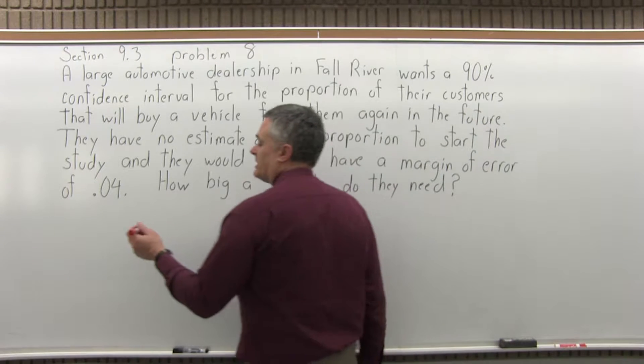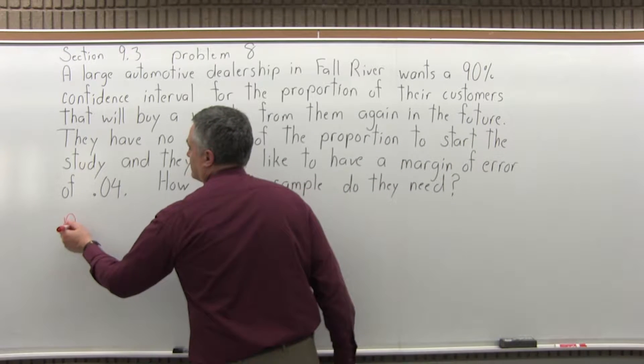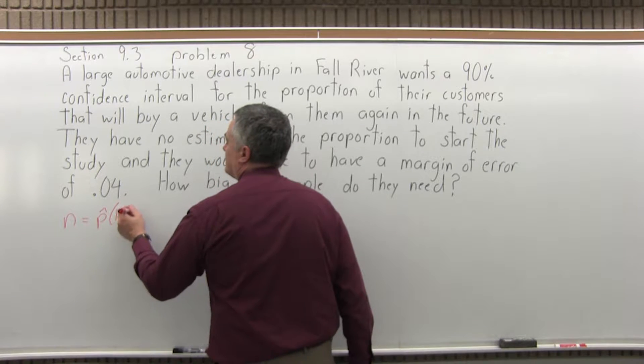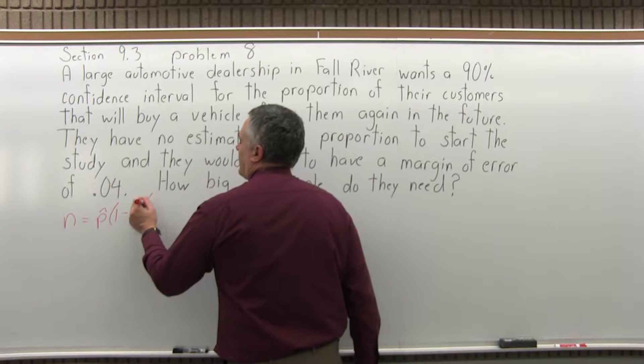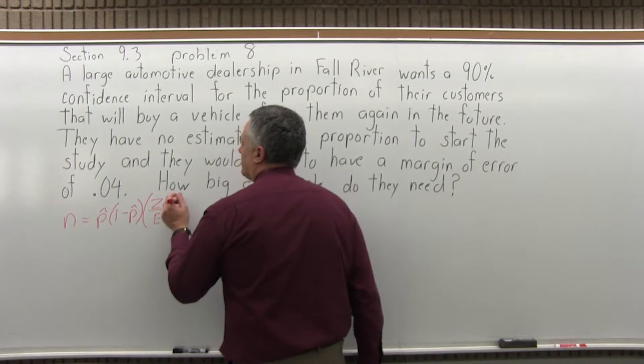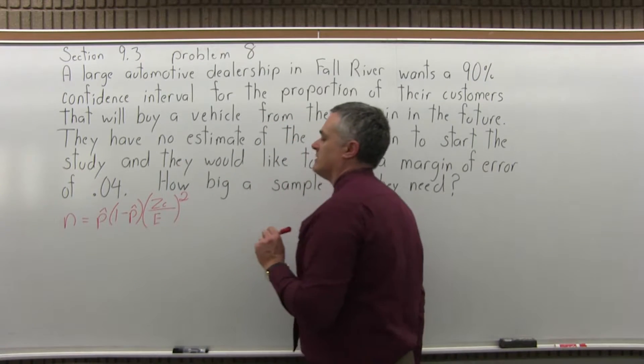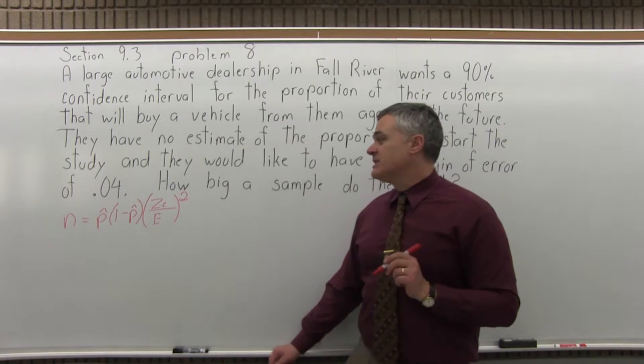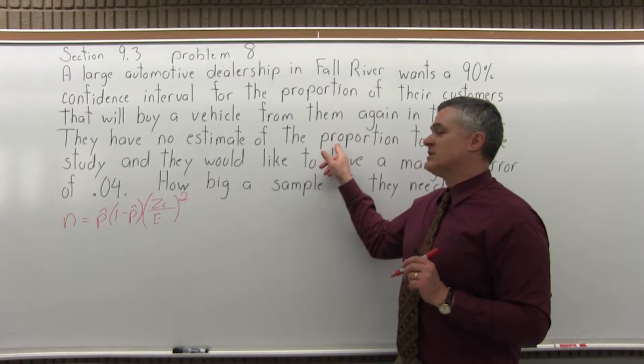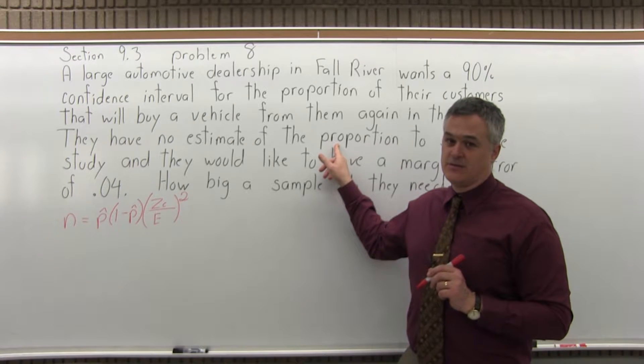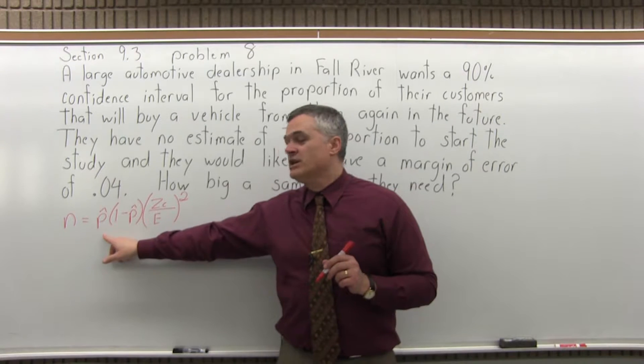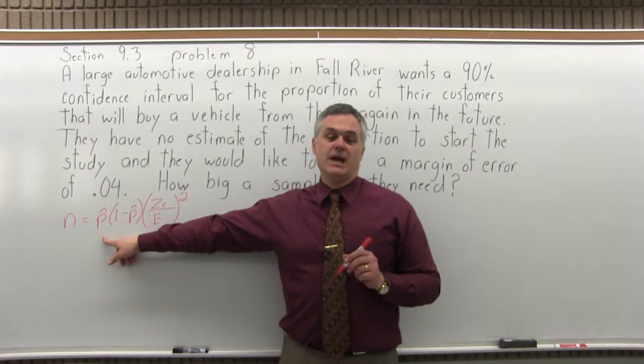So the formula to determine sample size is n equals p hat times 1 minus p hat times z sub c over capital E raised to the second power. Now to fill this in we start with p hat and it says right in the question they have no estimate of the proportion to start the study. It's not really a problem.